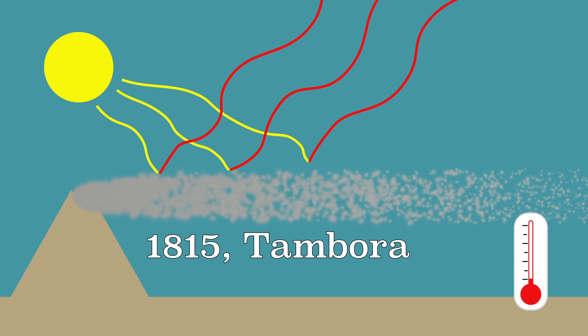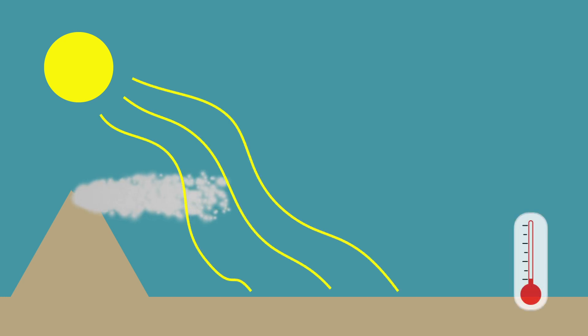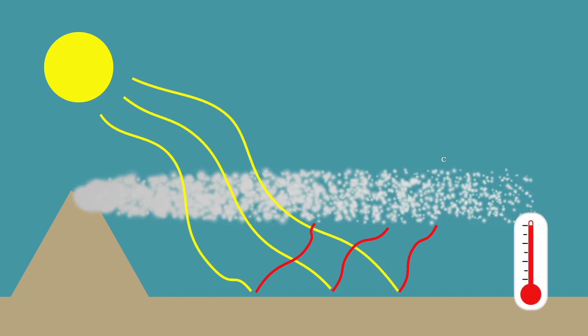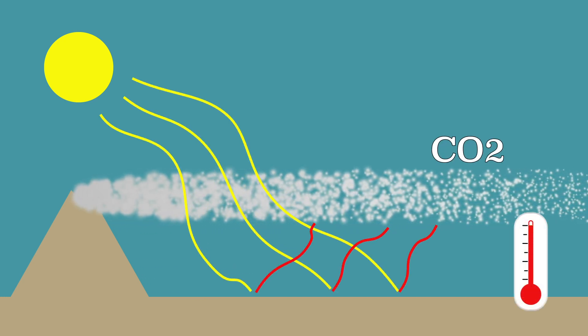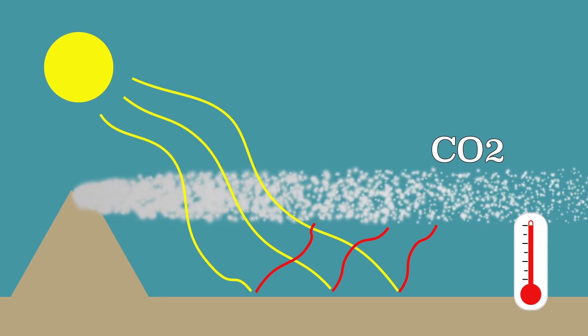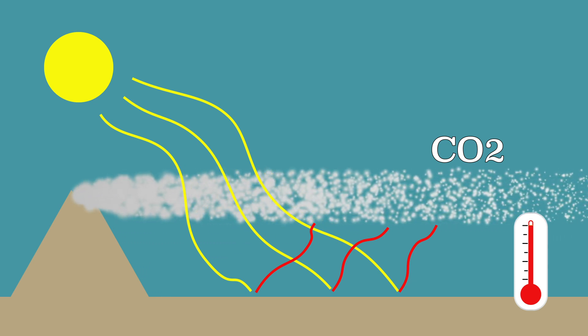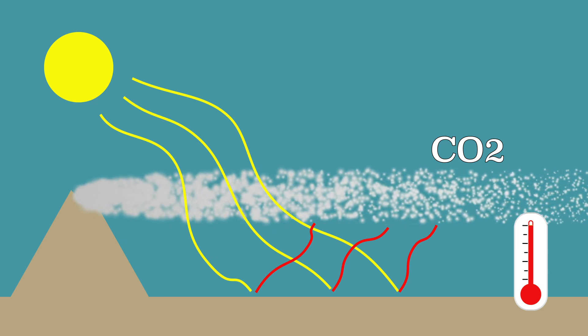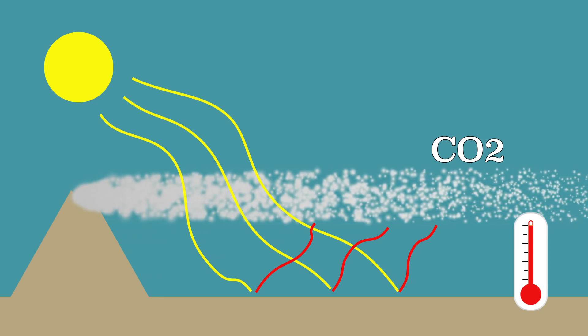Although in the short term volcanoes cause a temperature decrease, in the long term they cause a temperature increase. Volcanoes emit the greenhouse gas CO2, which causes the temperature to rise. The Earth was once a planet full of ice, but due to a lot of volcanic activity, a lot of CO2 was emitted and the temperature on Earth slowly increased.